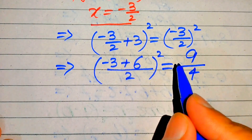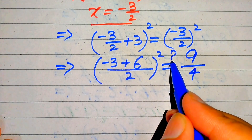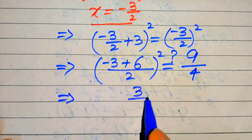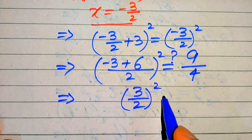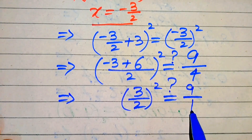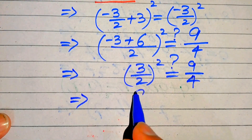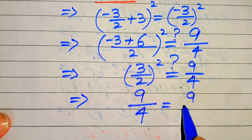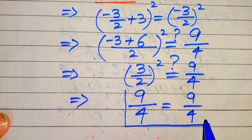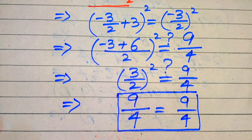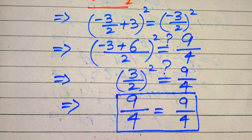Checking the left hand side: 3² = 9 and 2² = 4, so (3/2)² = 9/4. We clearly see that 9/4 = 9/4, which confirms that x = −3/2 satisfies our given equation. This is the final answer. Thank you so much for watching this video — please subscribe to my channel for more exciting videos.